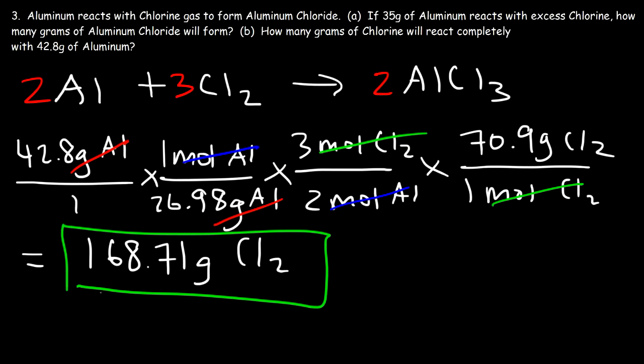Now you know how to perform many stoichiometry conversions: mole-to-mole conversions from problem one, moles of one substance to grams of another, grams of one substance to moles of another, and gram-to-gram conversions. These are common stoichiometry problems you might see in a typical chemistry class. Thanks for watching, and have a good day.